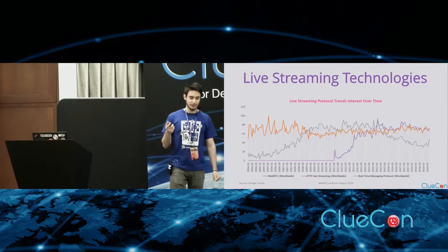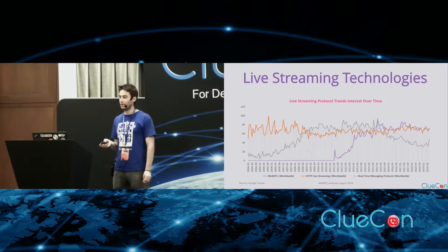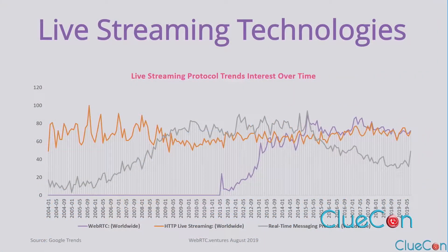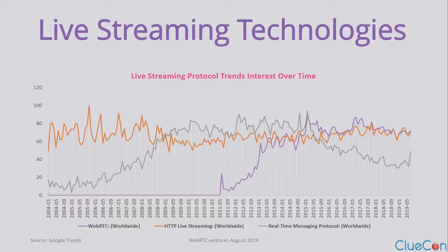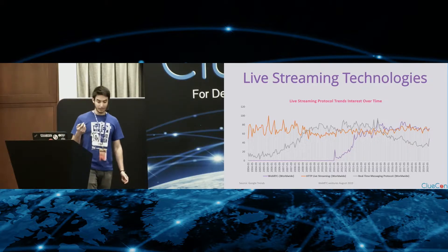One thing I did first was check the three main protocols that people use for live streaming on the web: WebRTC, HLS, and RTMP. I just did a Google Trends search of those terms for the last 15 years. It's interesting to see how HLS is still pretty popular, probably because it's easy to implement and has been very stable for the last 15 years. And WebRTC, which didn't exist 10 years ago, is now probably as popular as HLS for live streaming applications.